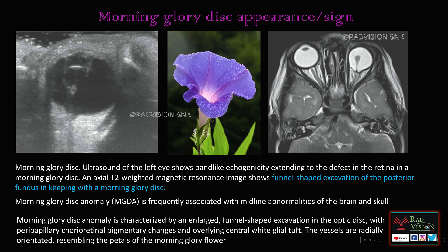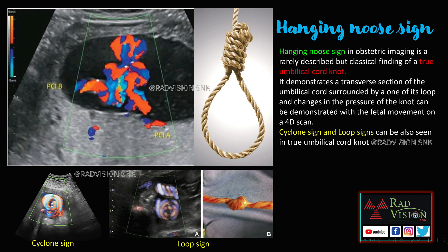The morning glory disc anomaly is characterized by an enlarged funnel-shaped excavation of the optic disc with peripapillary chorioretinal pigmentary changes and an overlying central white glial tuft. The vessels radiate in a radially oriented pattern resembling the petals of the morning glory flower. This is the morning glory disc appearance or sign, which is one of the anomalies of the eye.